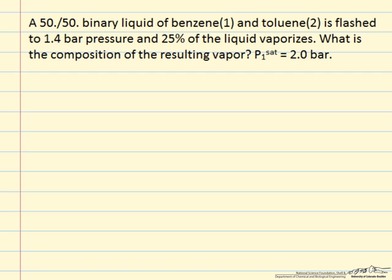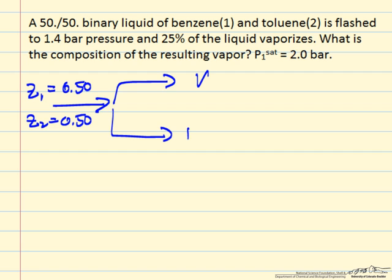And so we're looking at a flash calculation where we come in with a mixture, z being the overall composition, in this case the liquid phase composition. We're going to end up with some vapor and some liquid.